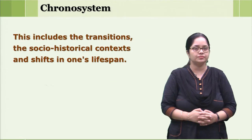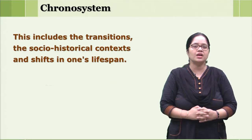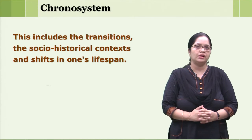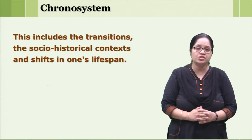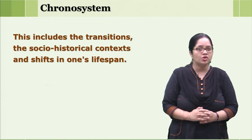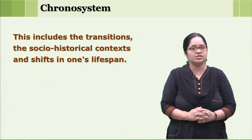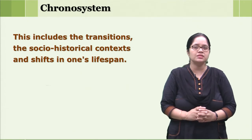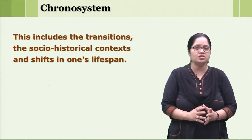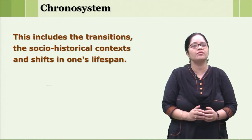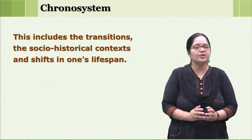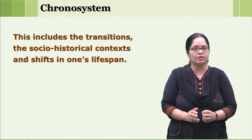The outermost layer is the chronosystem. The chronosystem talks about all the transitions, social changes, historical changes, and technological changes which take place at a larger societal level but still influence the development of the child.